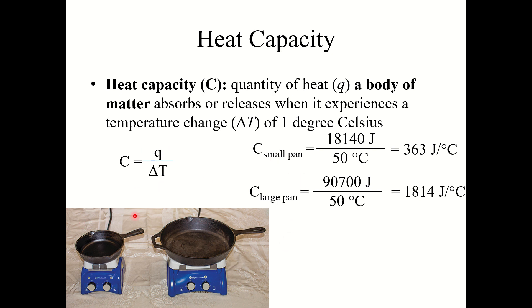So if we look at two frying pans, we've got a small frying pan and a large frying pan. So let's say we run an experiment and we heat both these frying pans up by 50 degrees Celsius. So the small frying pan, it took 18,140 joules to raise its temperature 50 degrees Celsius, whereas the large frying pan took 90,700 joules to raise it 50 degrees Celsius.